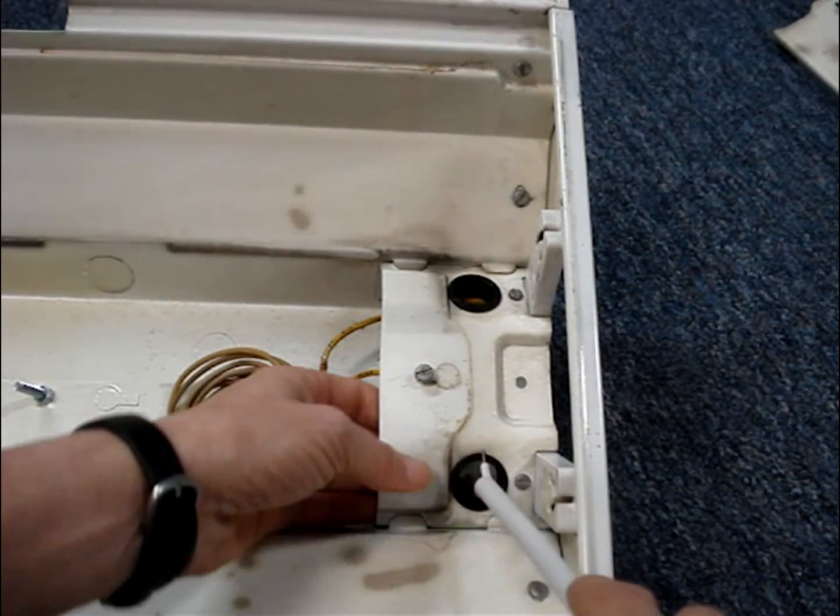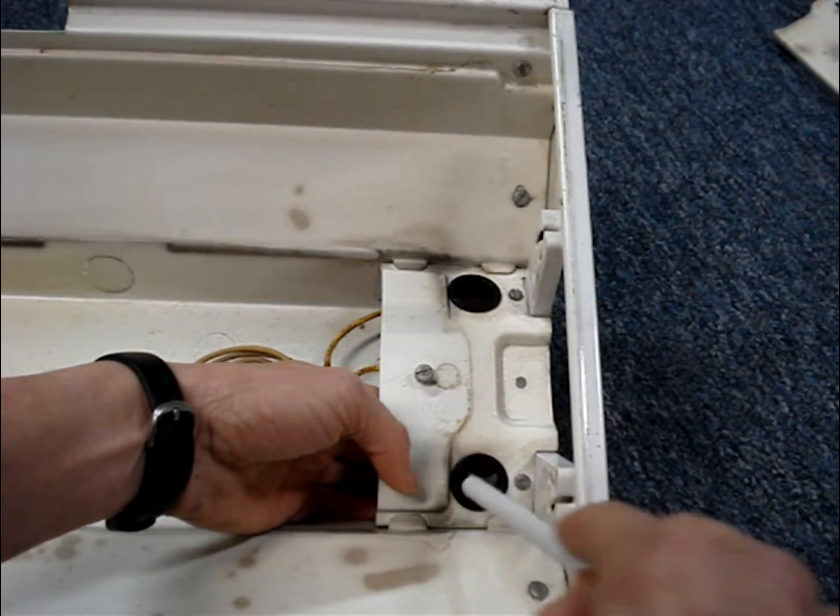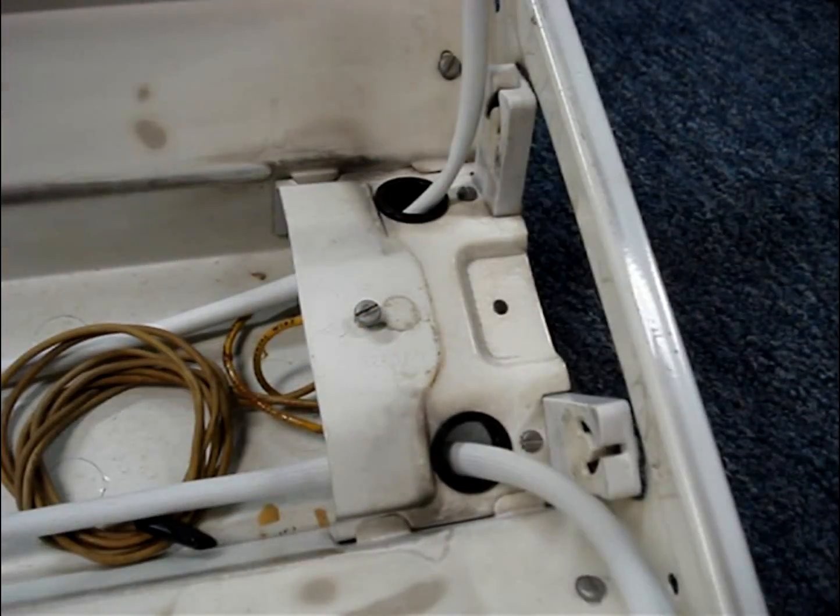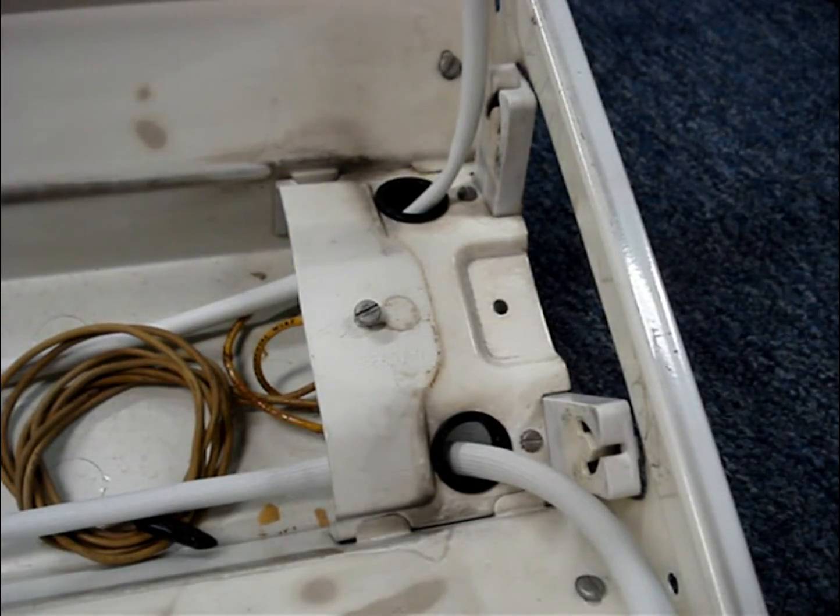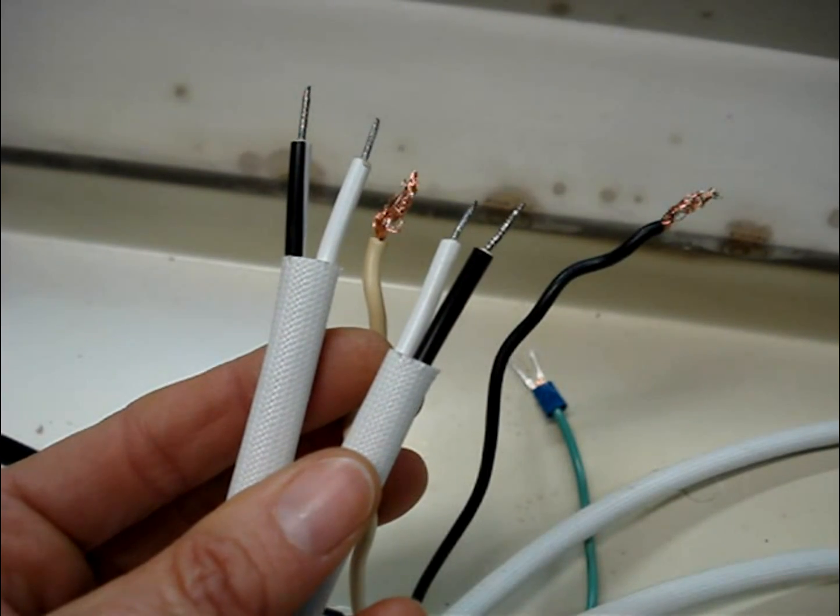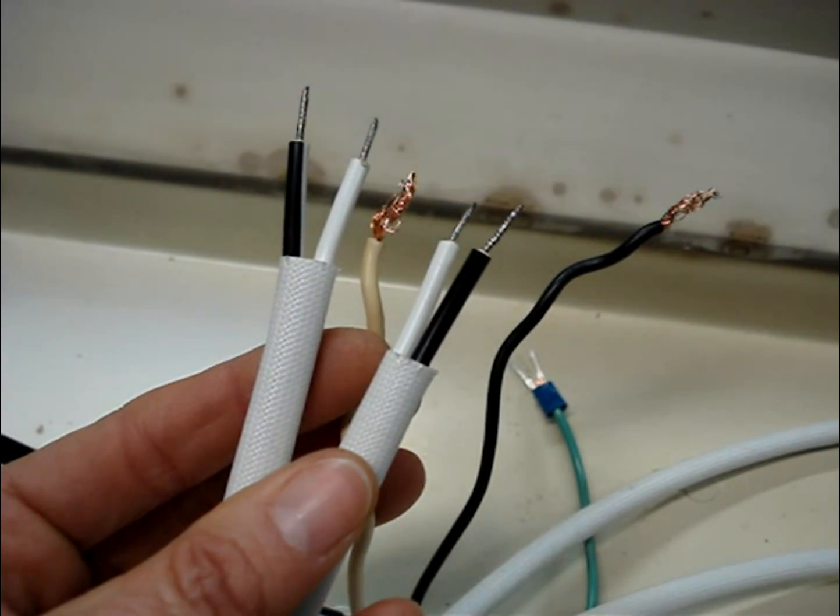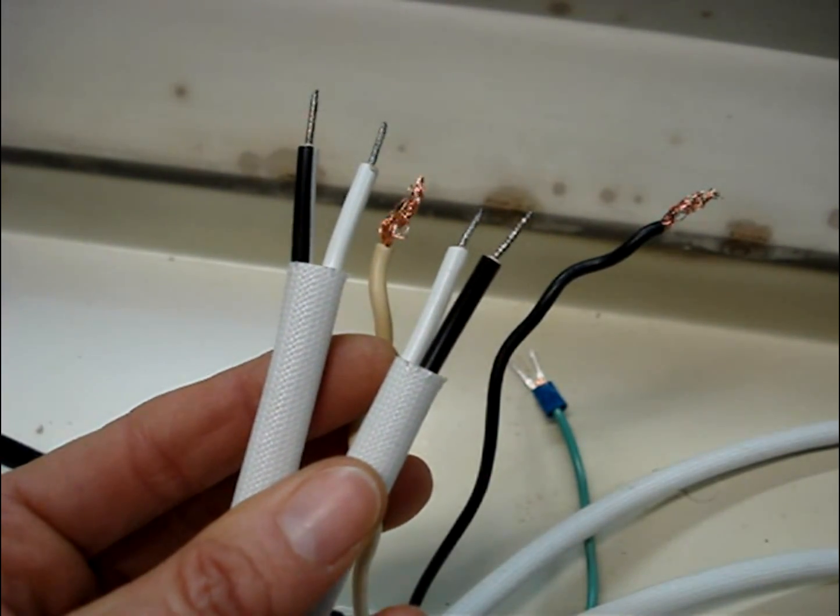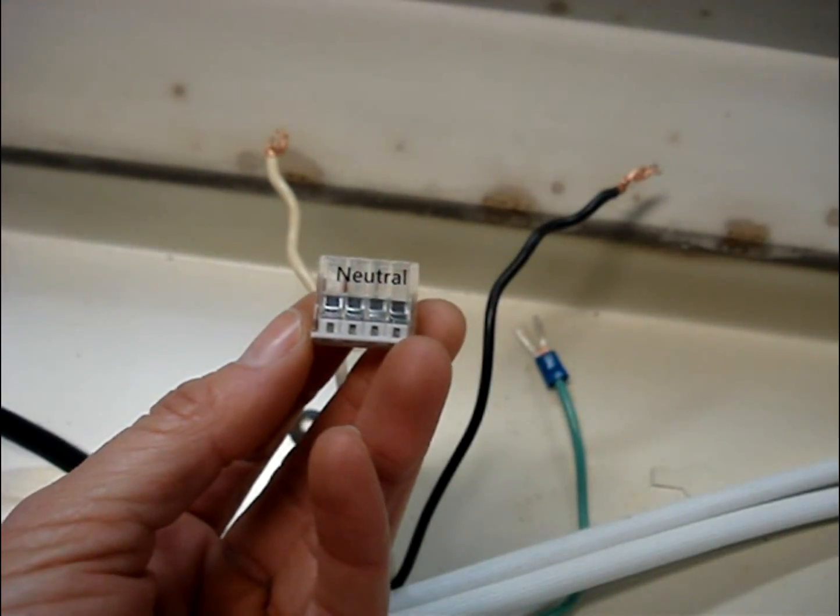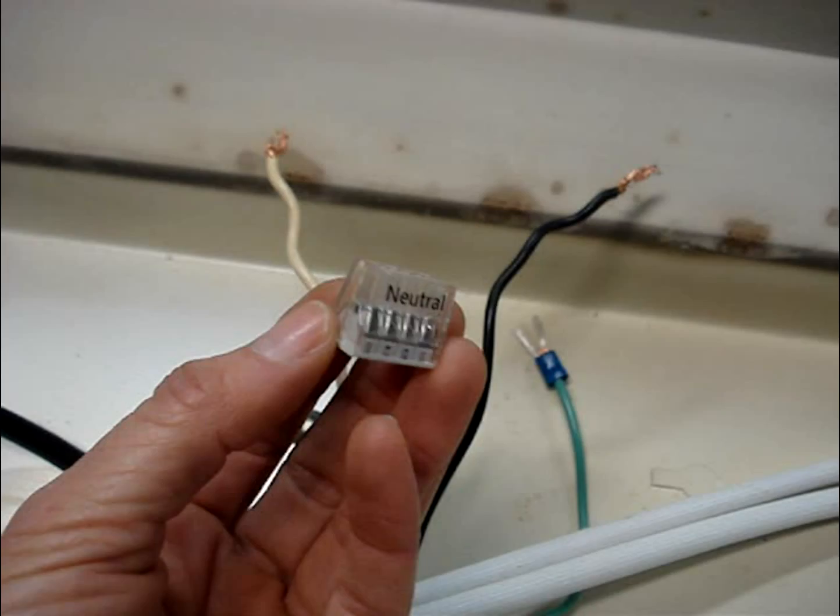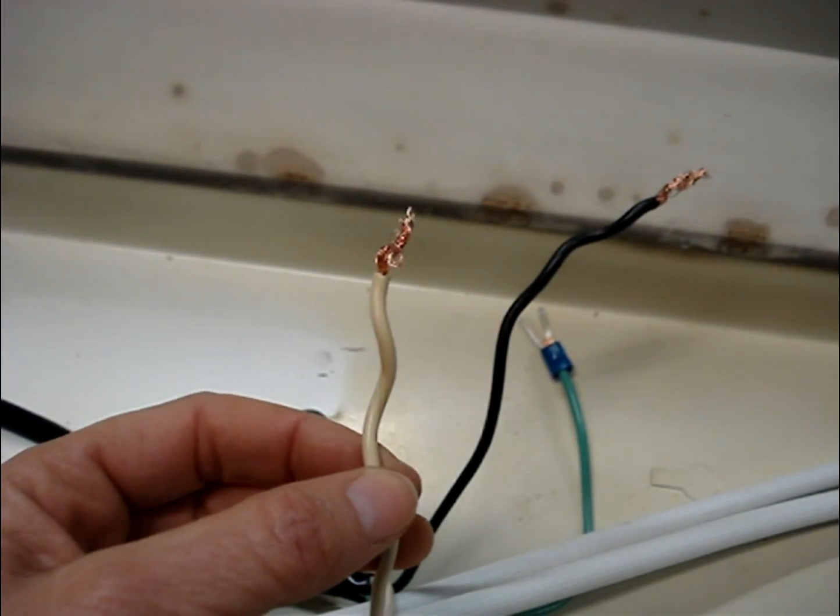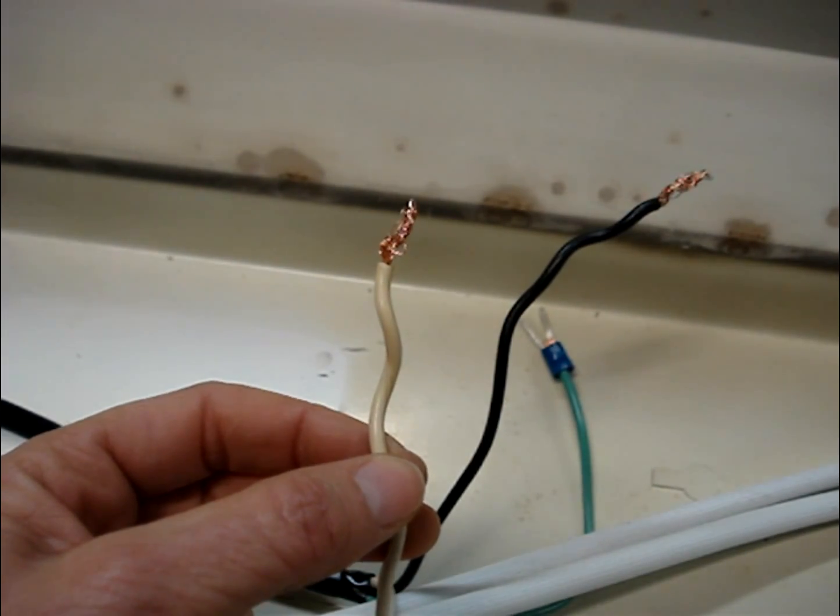Feed the wires from the ends of the LED tubes through the knockouts. Connect the three white wires together, and then connect the three black wires together. The manufacturer supplies you with quick connectors. Because I have stranded wire, I'm not going to use the quick connectors. I'll use wire nuts instead.